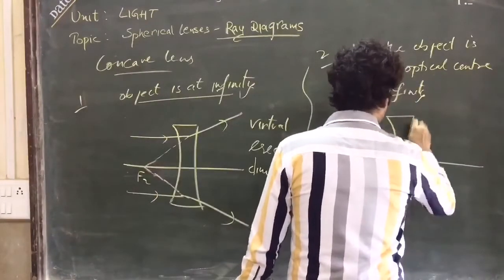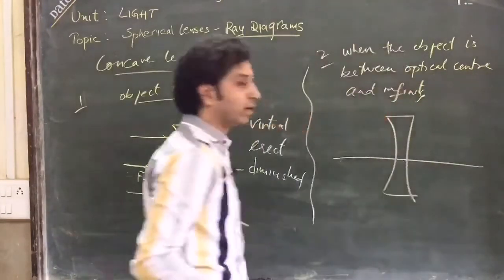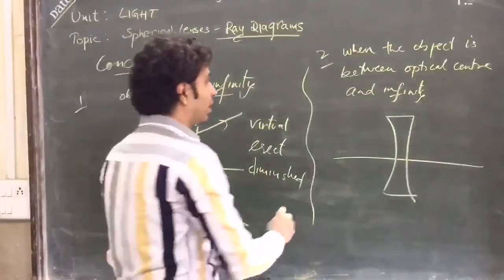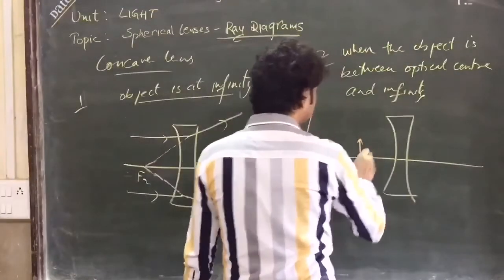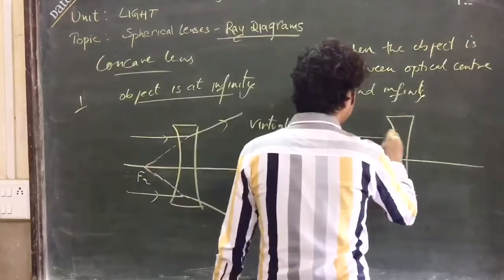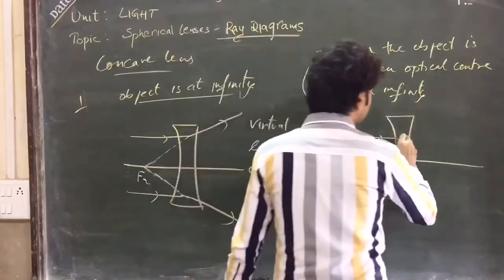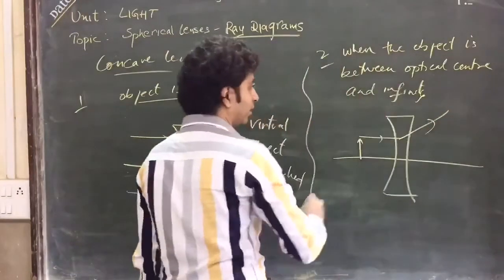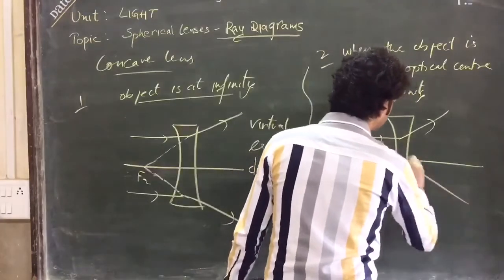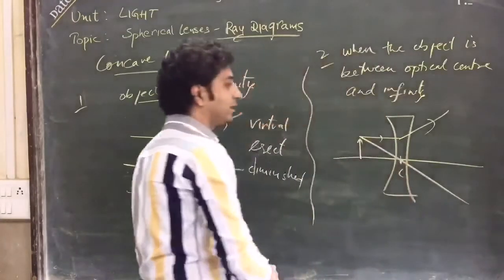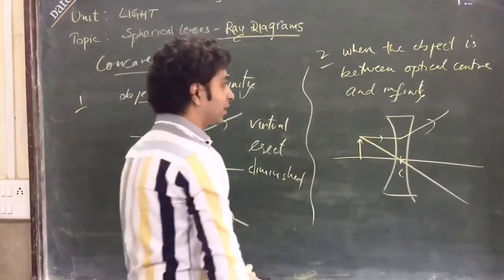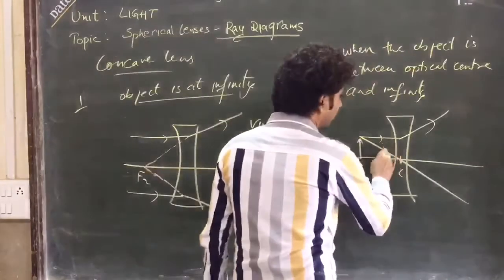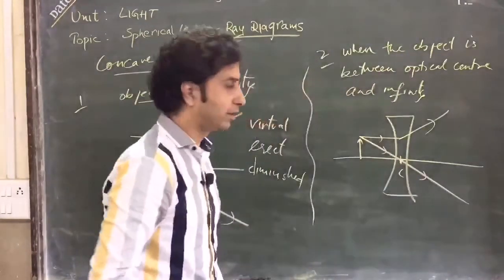If I take any object like this, a ray of light parallel to the principal axis will diverge. And if I draw one ray from the optical center, that is undeviated. Then this will be undeviated.